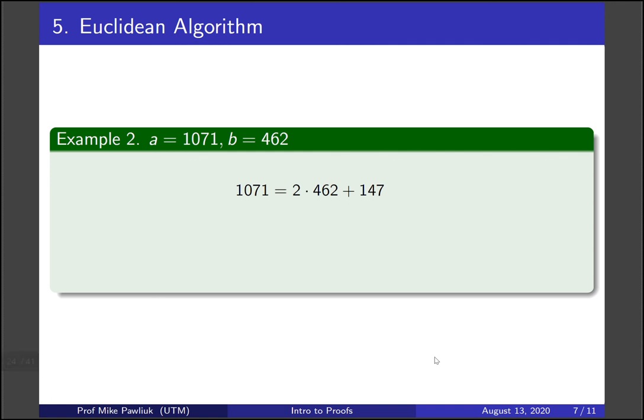Here let's start with a equals 1071 and b equals 462. Applying the division algorithm to this gives us a remainder of 147. Now we divide 462 by 147 and get a remainder of 21. Then we divide 147 by 21, get no remainder, which tells us to stop.